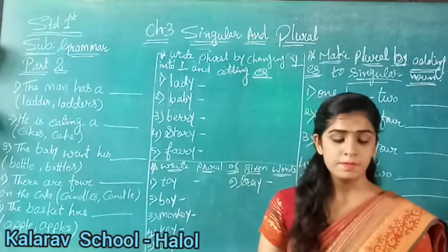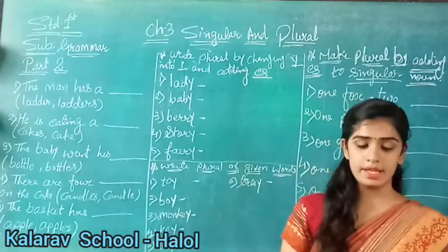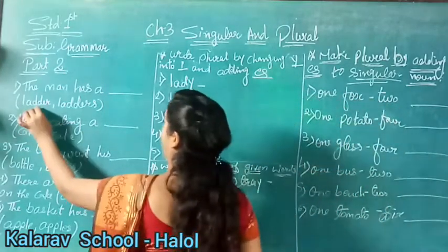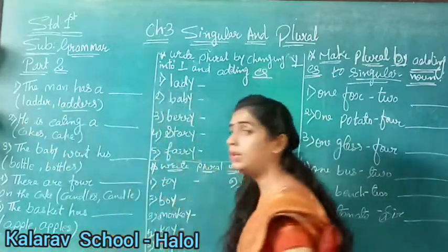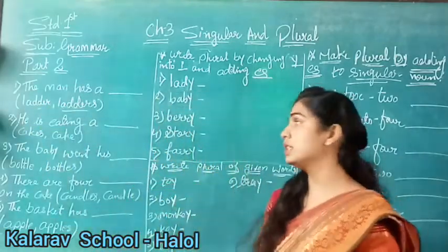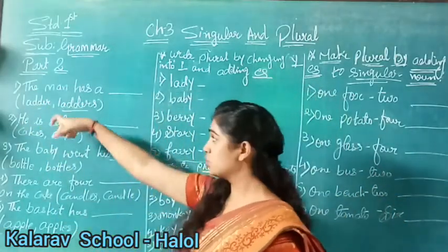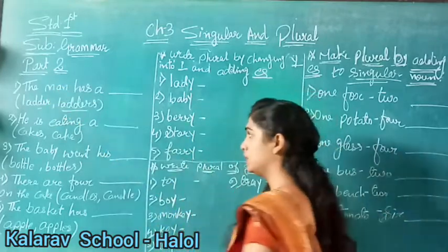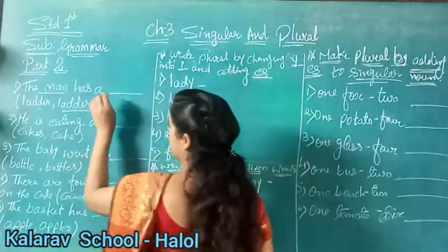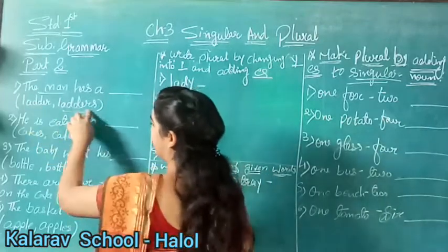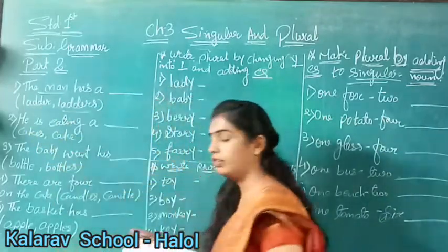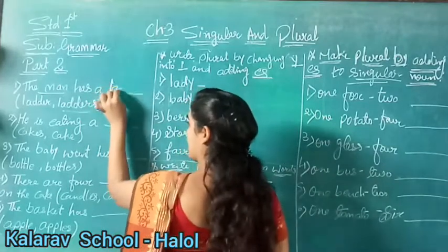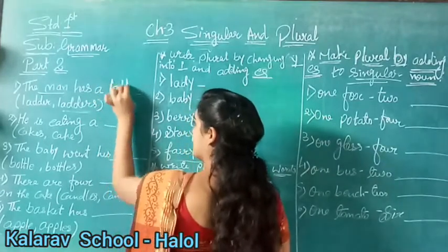We will read first number: 'The man has a blank.' Your options are letter and letters. So tell me - will it be singular or plural? First, you see here the man. Man means only one person is there, so this is singular. Here we will write letter, not letters. Our first answer is letter.